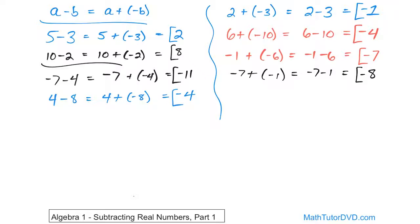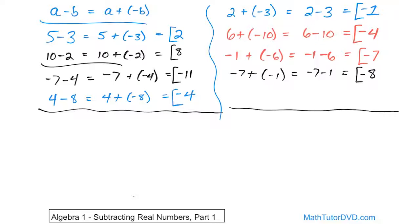Now here's something you'll use over and over again in algebra. When you have two negative signs together, they make a positive. For instance, if you have negative and then a parentheses with negative three inside, you've got another negative sign sitting right in front of it — those two negatives annihilate each other and you're left with positive three. Two negatives sitting right next to each other always make a positive.